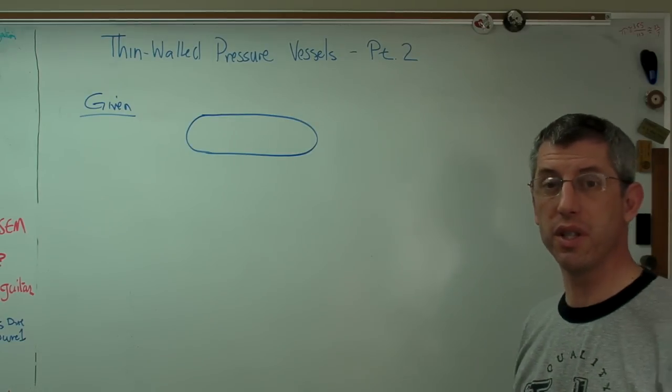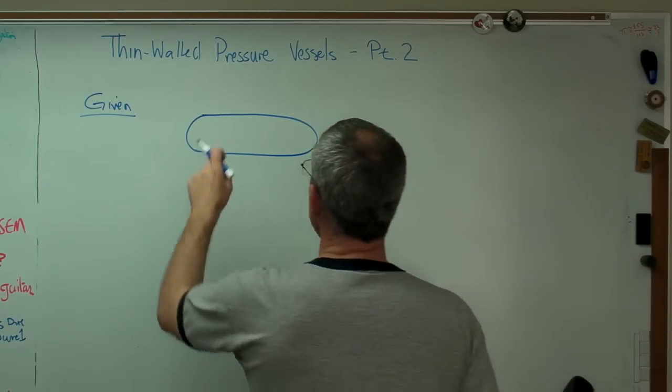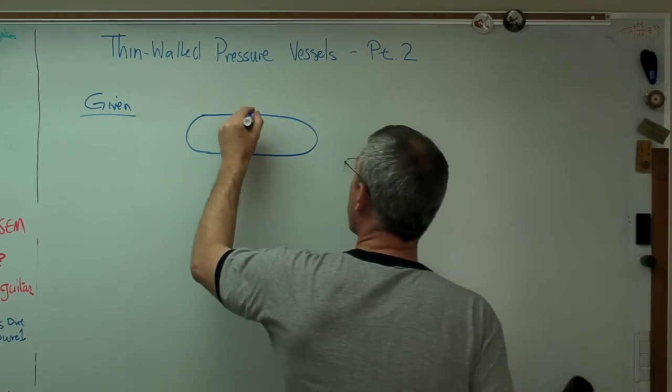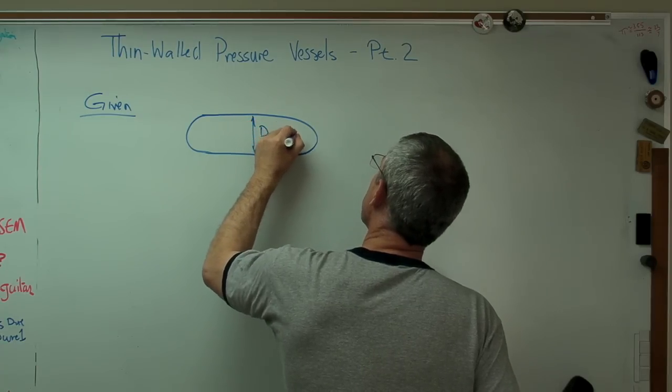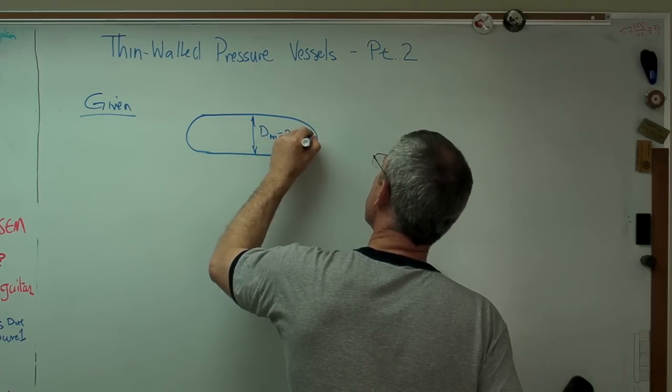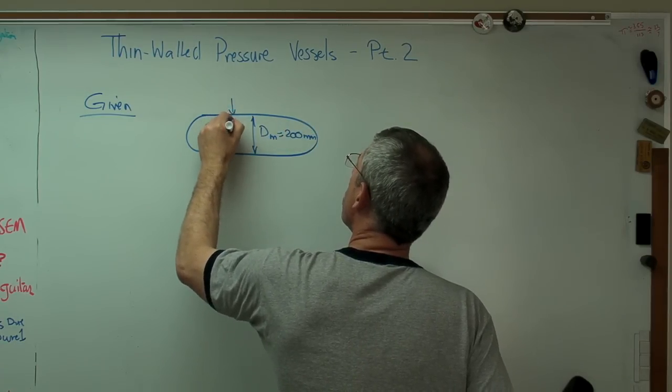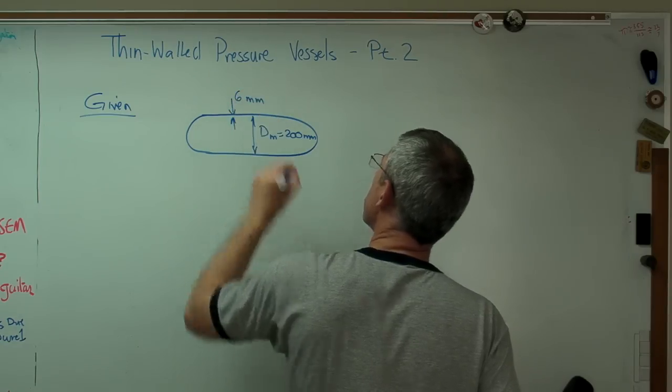To make things simple, I'm going to say the mean diameter is 200 millimeters. The wall thickness is 6 millimeters. That's about right. About a quarter inch if you're working in English units.